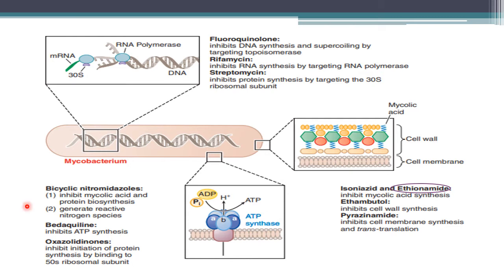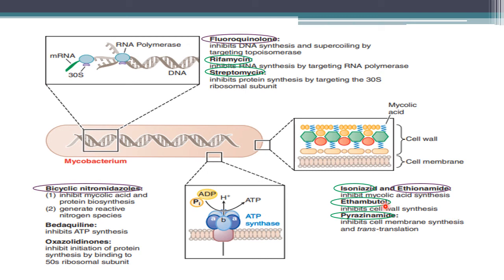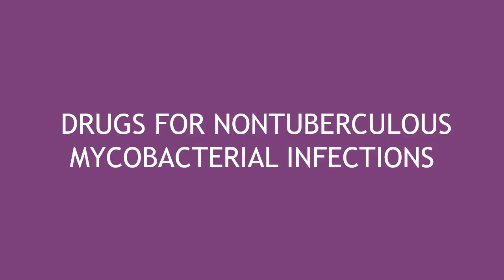There is a diagram showing the mechanism of action of all anti-mycobacterial drugs — first-line and second-line. You can see the mycobacterium with its cell wall, cell membrane, and DNA, and the sites of action of isoniazid, ethambutol, pyrazinamide, rifampin, streptomycin, ethionamide, fluoroquinolones, bicyclic nitroimidazole (pretomanid), bedaquiline, and oxazolidinones (linezolid). Revise the mechanism of action of all drugs from this diagram.